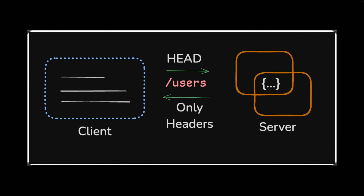Now we move into less commonly used methods. HEAD is used for getting only the headers, not the body. With GET you get the full content; with HEAD you get only the headers. The analogy: you ask the waiter if a dish is still available without looking at the menu or placing an order. Before even opening the menu, you just ask, 'Do you have pizza today?' — that's what HEAD does: it gets some information about the headers without fetching the full response body.